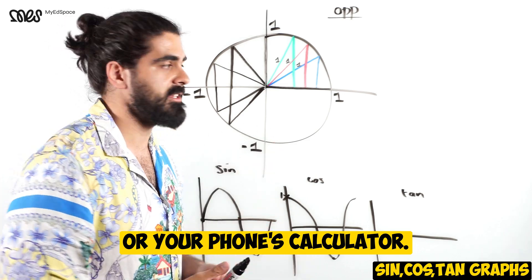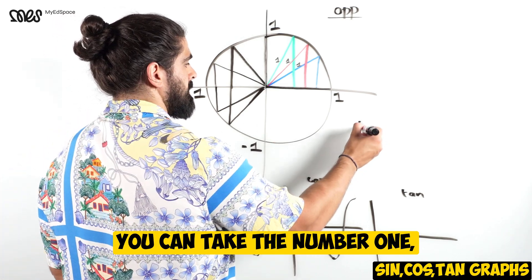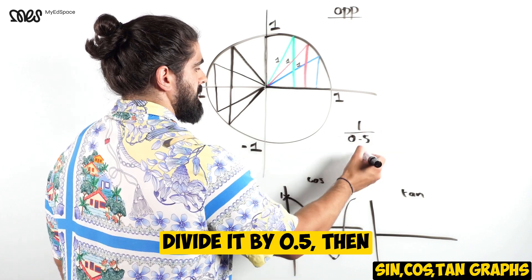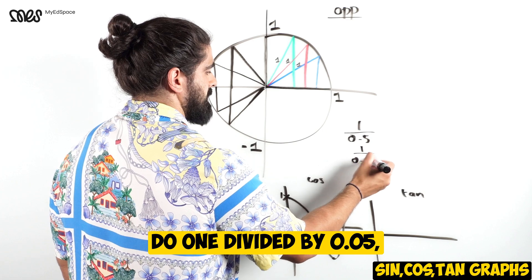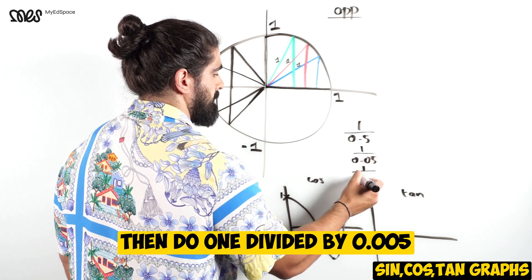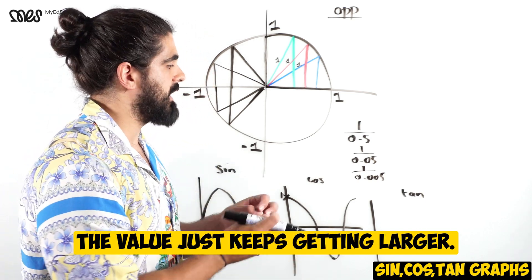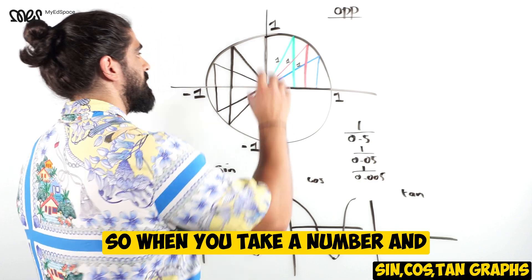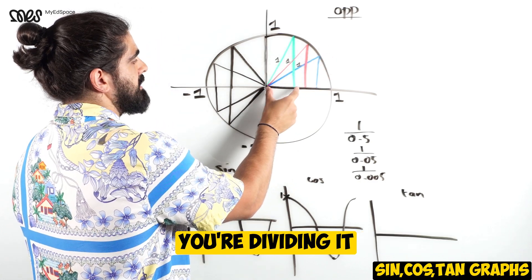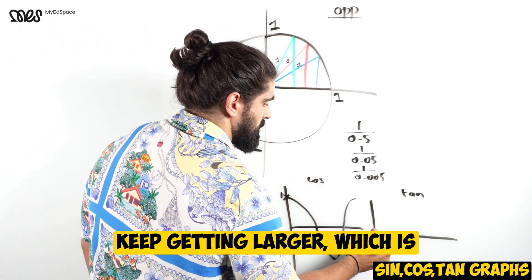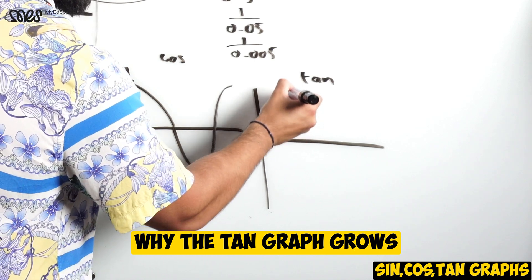You can do it in a calculator. Take the number 1 divided by 0.5, then 1 divided by 0.05, then 1 divided by 0.005. The value just keeps getting larger. When you're dividing by a number that keeps getting smaller, it's going to keep getting larger, which is why the tan graph grows quite fast.